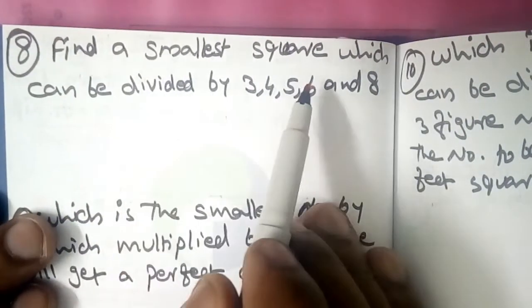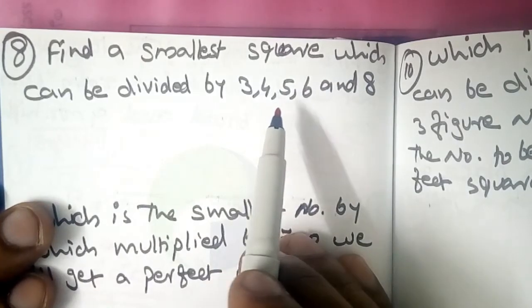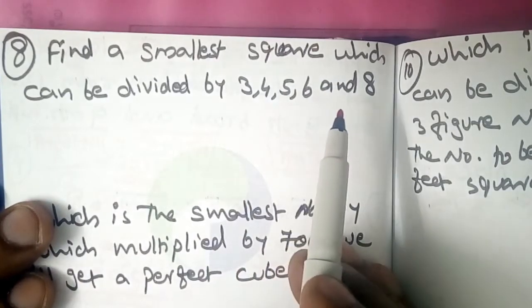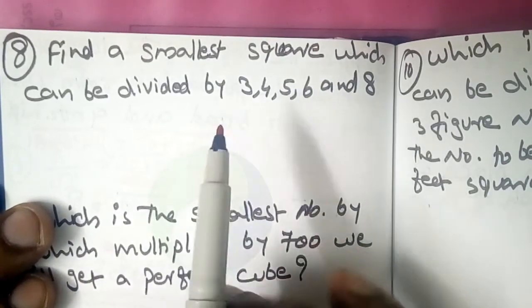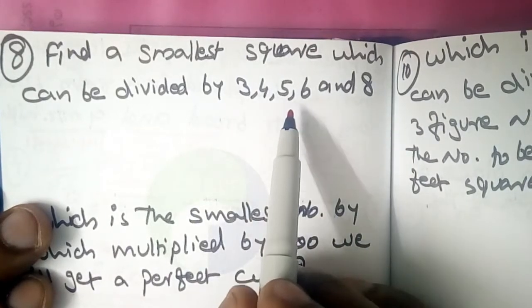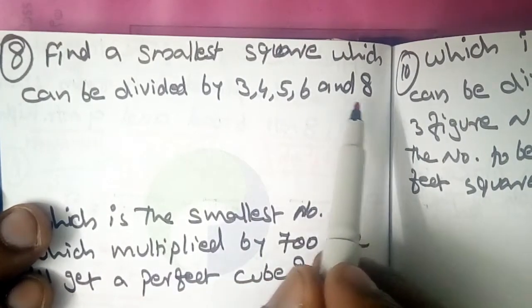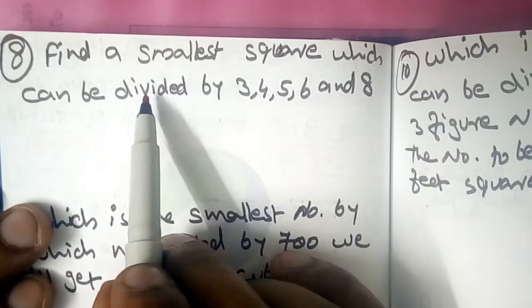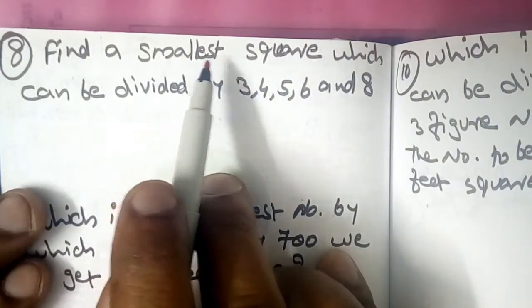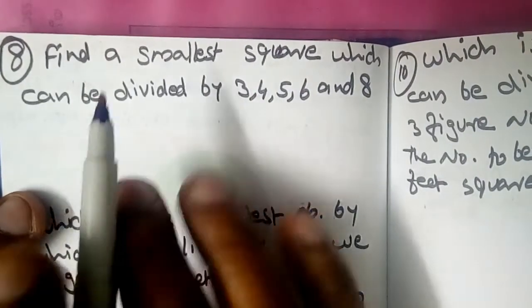Question number 8: Find the smallest perfect square which can be divided by 3, 4, 5, 6, and 8.